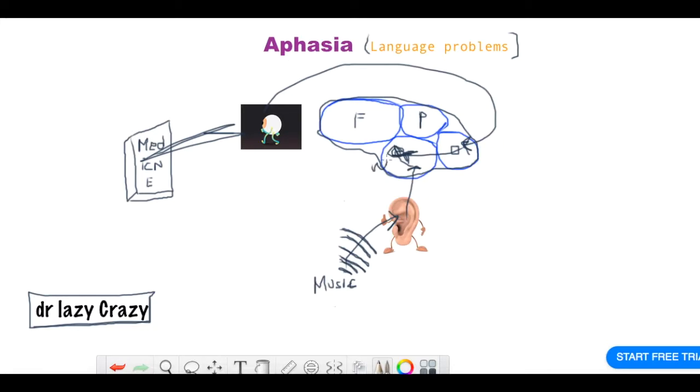Wernicke's area is in the temporal lobe. Here you get comprehension. This is basically coordinated with your memory system to make comprehension, to make you understand something.